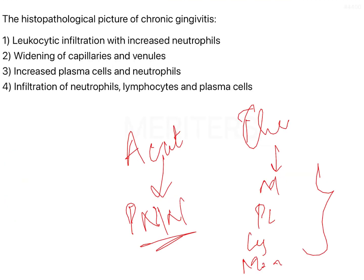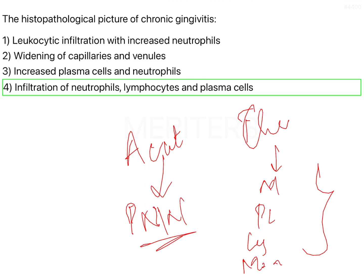If you take another section, you will also see that there are some PMNs — neutrophils — present in chronic gingivitis cases. Why? Because they are the first cells of acute inflammation, and since there is constant irritation over a period of time, there will be phases when irritation stops and then starts again. When there is a phase of new irritation, the neutrophils recruit themselves and there will be inflammation. So in a chronic gingivitis case, you will see all three types of cells: neutrophils, lymphocytes, as well as plasma cells. That is why option 4 is the answer to the question.